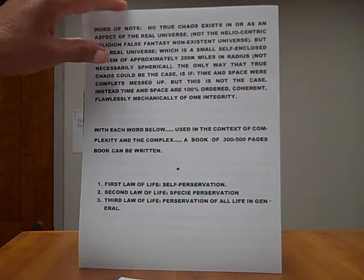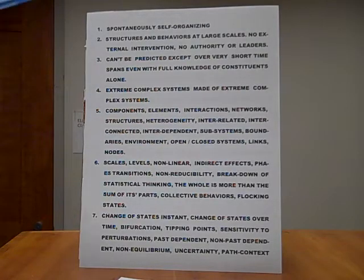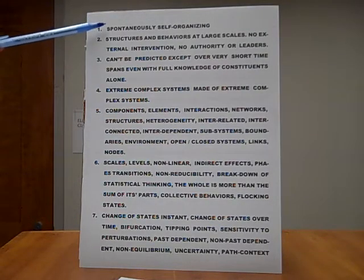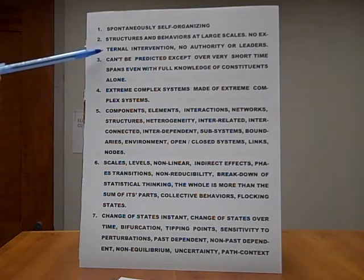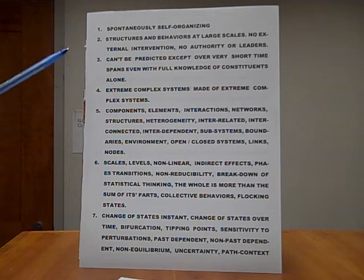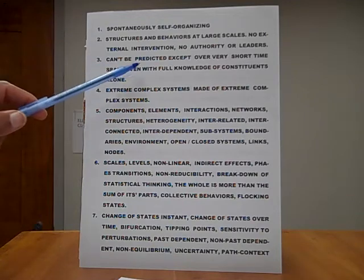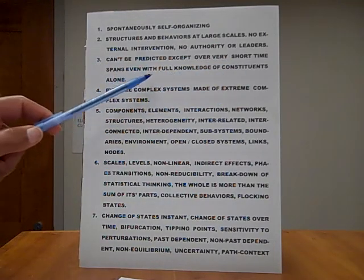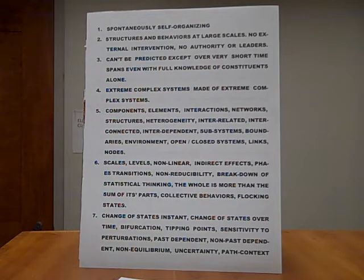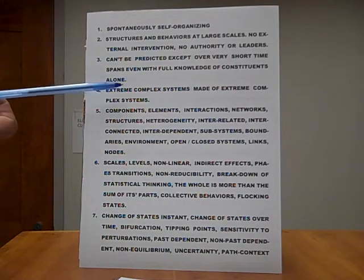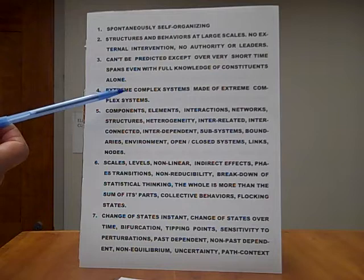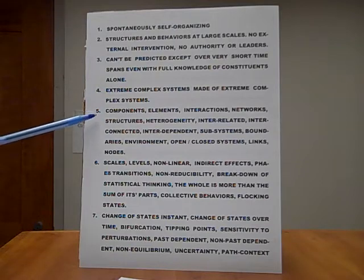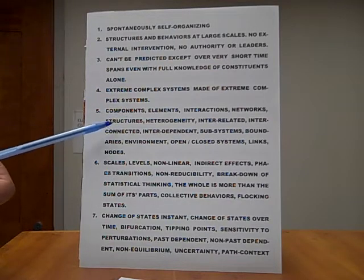Now we will go to these words. Hold on. Each one of these words, a 300 to 500 page book, can be written on these words. Each one of them. Number one, spontaneously self-organizing. Structures and behaviors at large scales. No external intervention, no authority or leaders are there. Number three, cannot be predicted except over very short time spans, even with full knowledge of constituents alone. Number four, extreme complex systems made of extreme complex systems. And extreme complex systems are shown to be made of simple things. Number five, components, elements, interactions, networks, each one of these words.